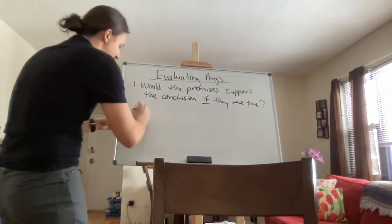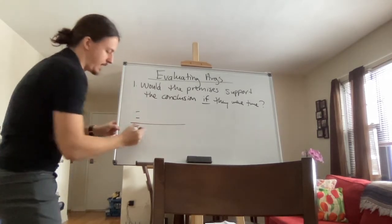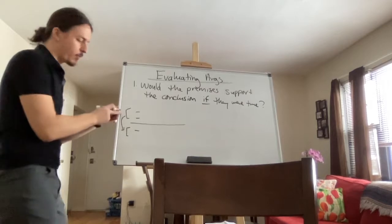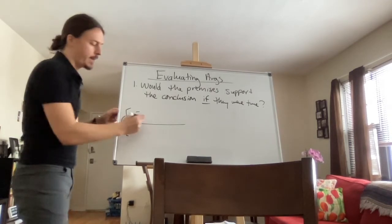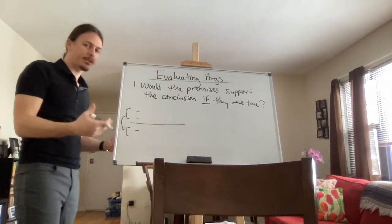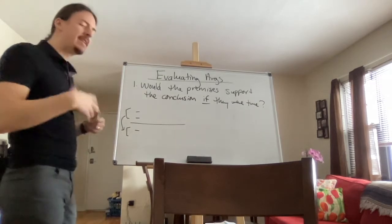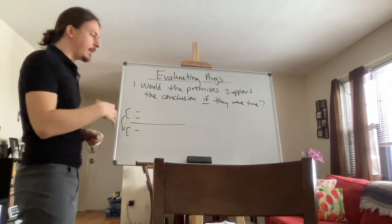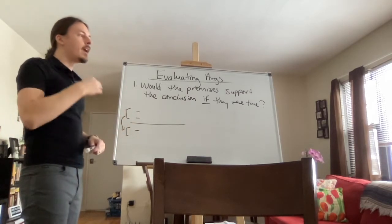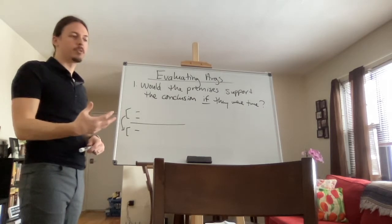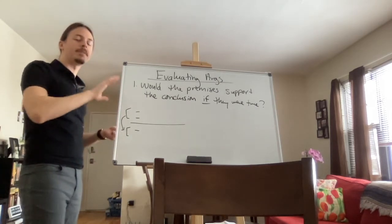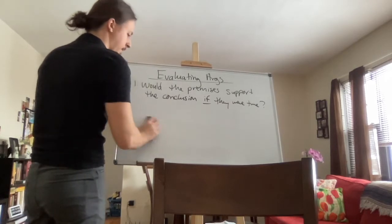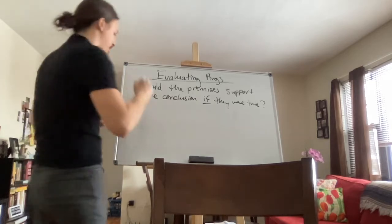There are your premises, and there's your conclusion. What you do is look at the relationship between these two groups and determine whether that relationship is adequate. What exactly we mean by adequate differs if it's a deductive or inductive argument, but the general principle is the same: you look at the relationship between the premises and the conclusion when you consider the premises being true hypothetically. If the premises were true, would they support the conclusion? That's one thing you look for.